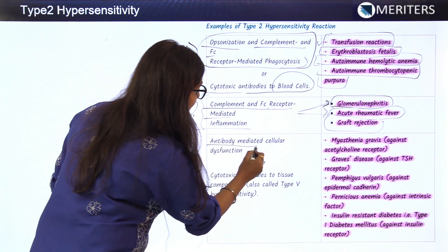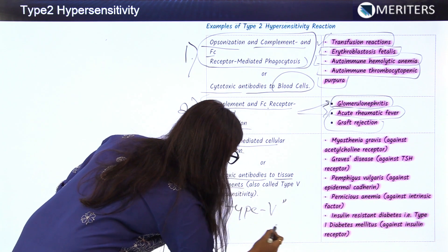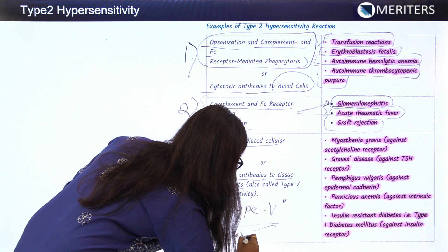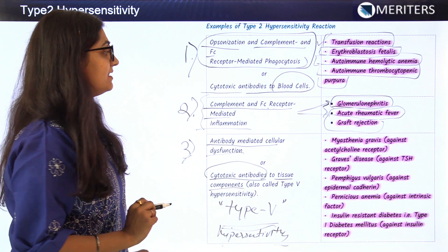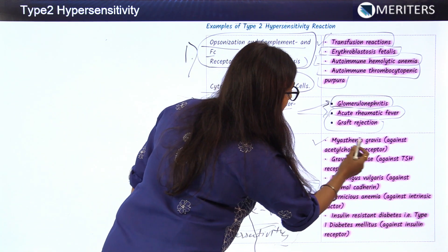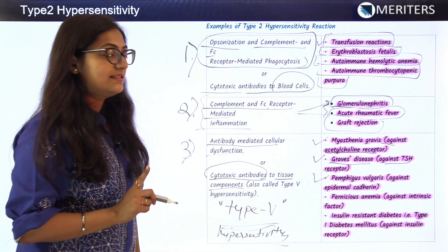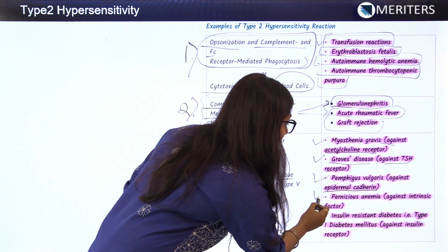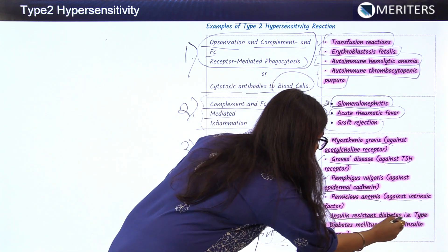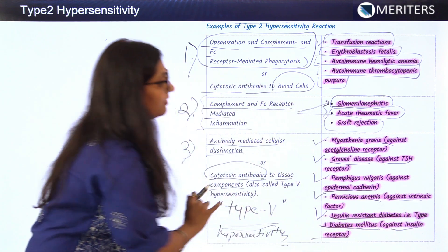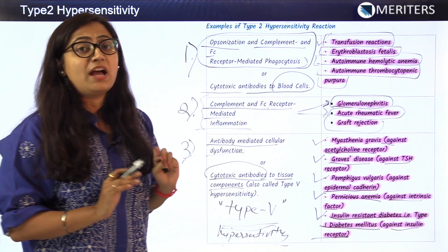The third mechanism is antibody-mediated cellular dysfunction, also known as type 5 hypersensitivity. Examples include myasthenia gravis (against acetylcholine receptors), Graves' disease (against TSH receptors), pemphigus vulgaris (against epidermal cadherin), pernicious anemia (against intrinsic factor), and insulin-resistant diabetes — type 1 diabetes mellitus — against insulin receptors.